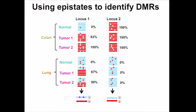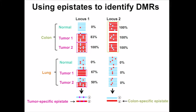Here is another example of two loci from six samples from two tissue types — colon and lung — where each cancer type has one normal and two tumors. Using the epistate frequency, we can identify loci that have two epistates at the DMR locus. The DMR region can be tumor-specific, as in the first locus where the methylated epistate is only found in tumor samples, or it can be tissue-specific, as in the second locus where the methylated epistate is only found in the colon samples.